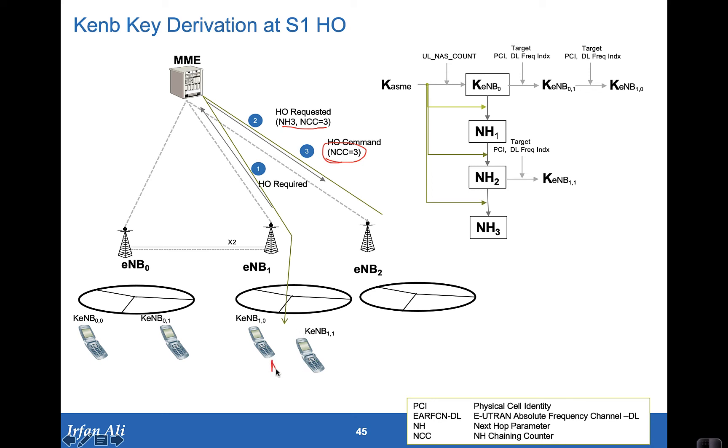Up to here, the NCC in the mobile is set to 2 because that's what it had used to derive KE-node B1.1. So with this NCC being set to 3, the mobile knows that it needs to do a vertical derivation of the key when it goes into this sector 2.1. So when the mobile does move into the sector 2.1,